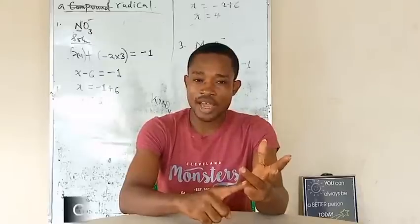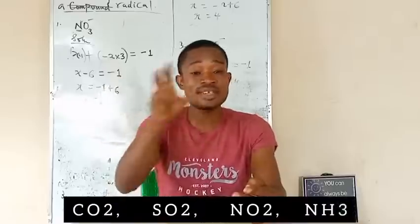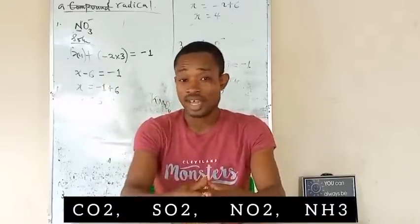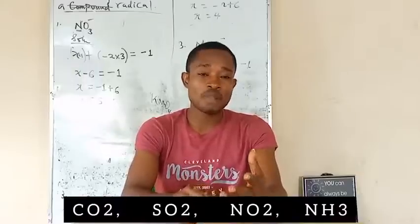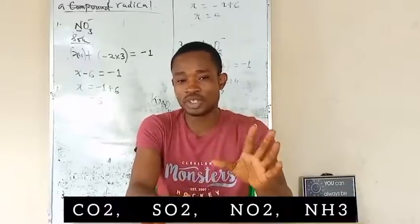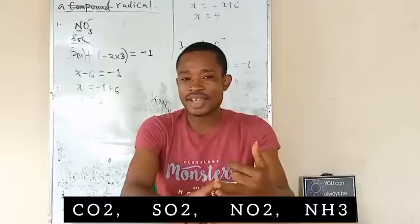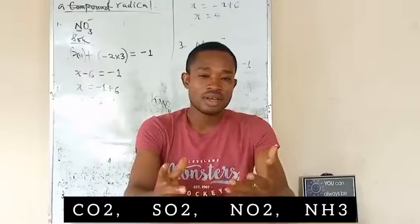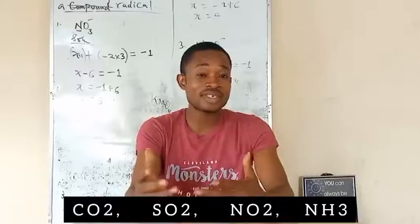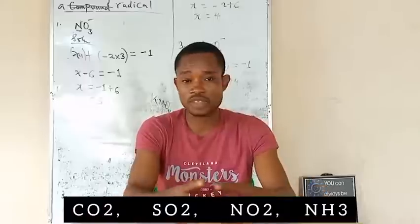The first gas is carbon(IV) oxide, CO₂. Carbon(IV) oxide is obtained from the acidic radical CO₃²⁻ — that is, trioxocarbonate(IV) ion. Trioxocarbonate(IV) ion usually produces carbon(IV) oxide during salt analysis. Another gas is SO₂, that is sulfur(IV) oxide. Sulfur(IV) oxide is usually liberated from SO₃²⁻, that is trioxosulfate(IV) ion.